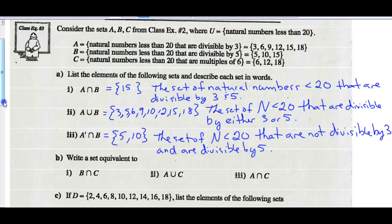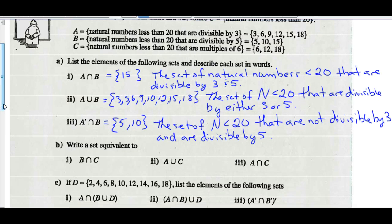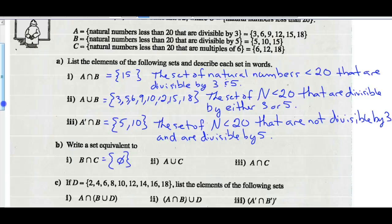Part B. B intersect C: set B is {5, 10, 15} and set C is {6, 12, 18}. They have nothing in common, so that would be the empty set — we call those disjoint sets. A union C: all numbers in C are already part of A, so A union C is the same as set A. A intersect C: all elements of set C are common to A and C, so A intersect C equals set C.